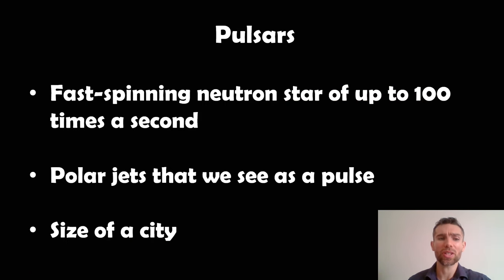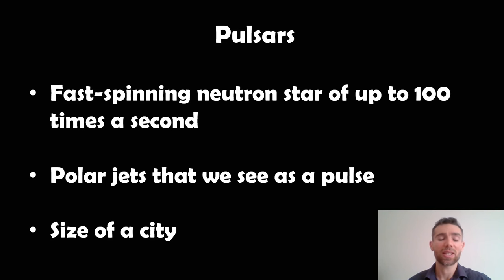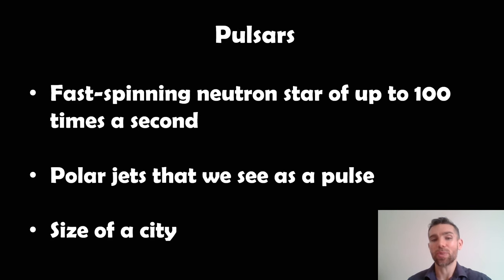So what are pulsars? They're very fast neutron stars — they can spin up to hundreds of times a second, so very fast rotating. They have these polar jets that we see as a pulse. They have radiation beams coming from their magnetic axis. They rotate very fast, but their magnetic axis is offset from their rotation axis, so it's a bit like a lighthouse — they sweep out these beams of radiation, and we detect that as a pulse. Hence the name pulsar.